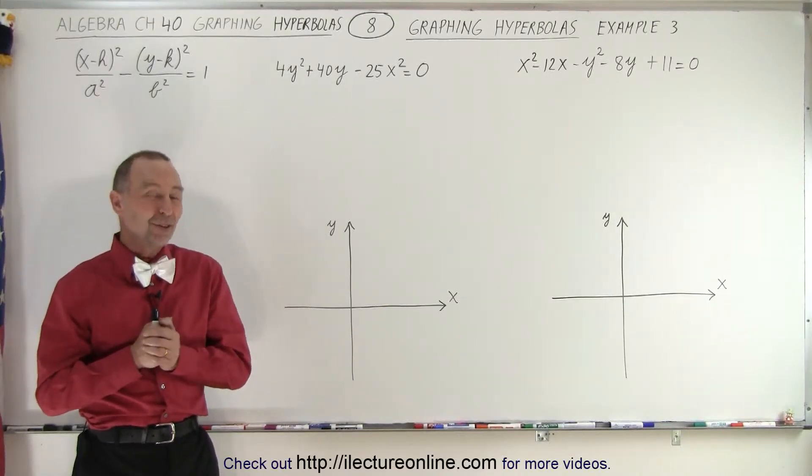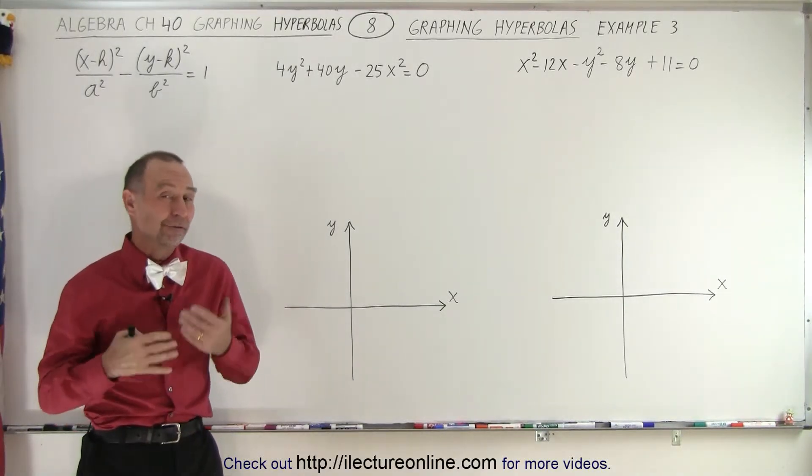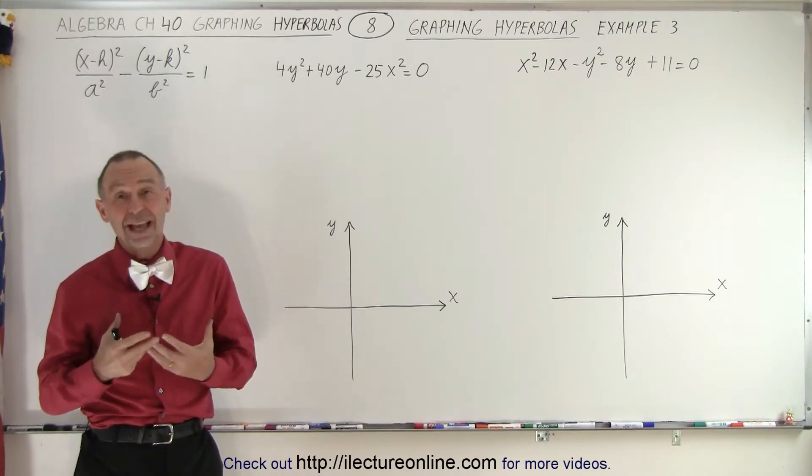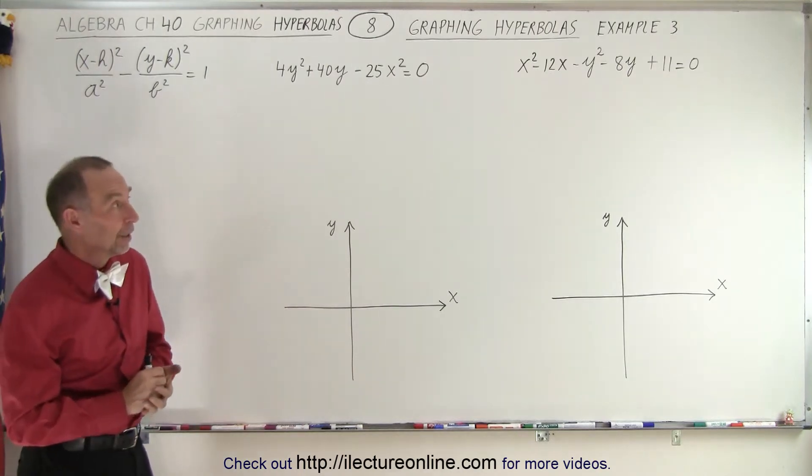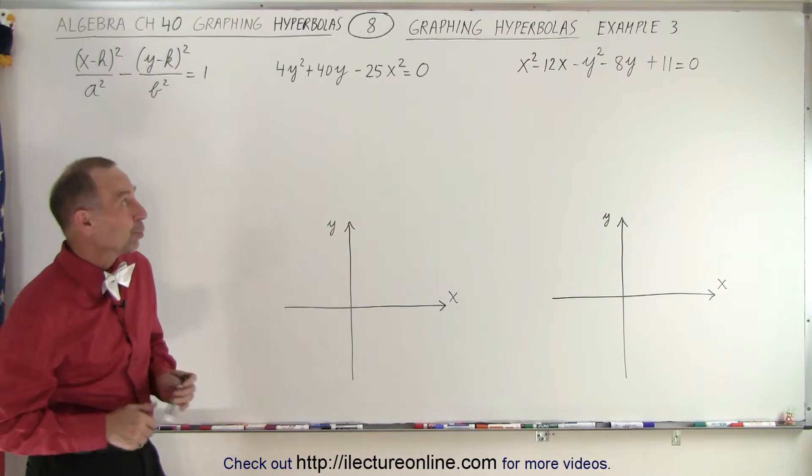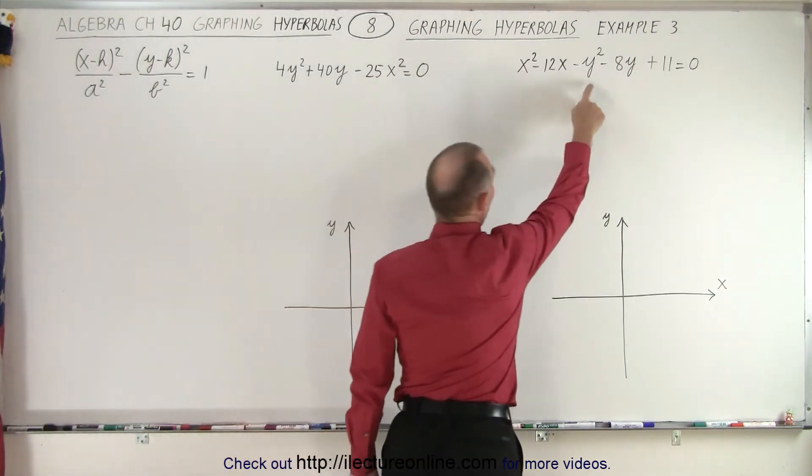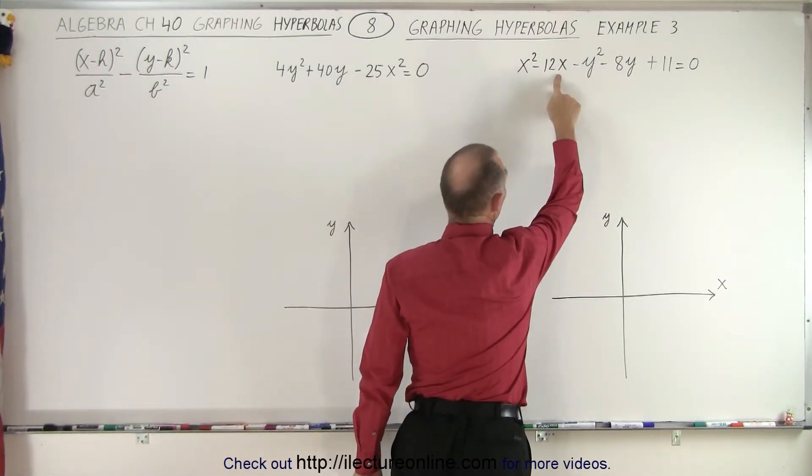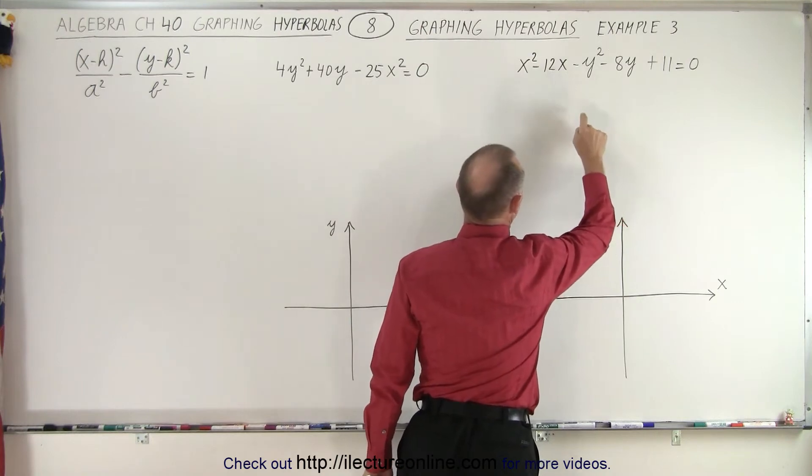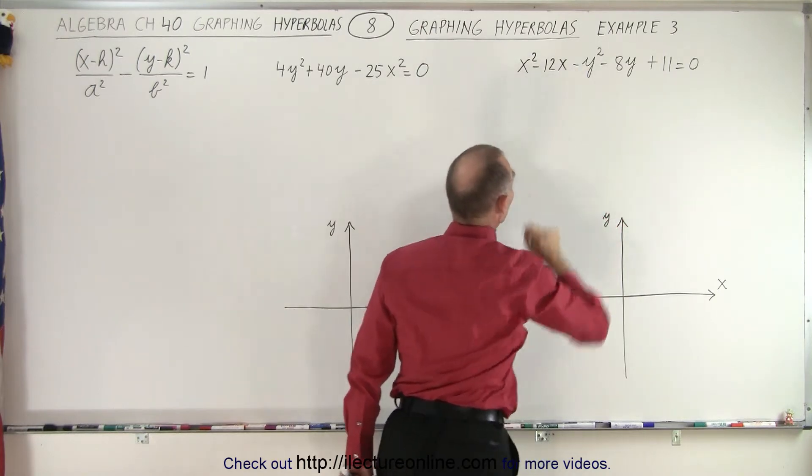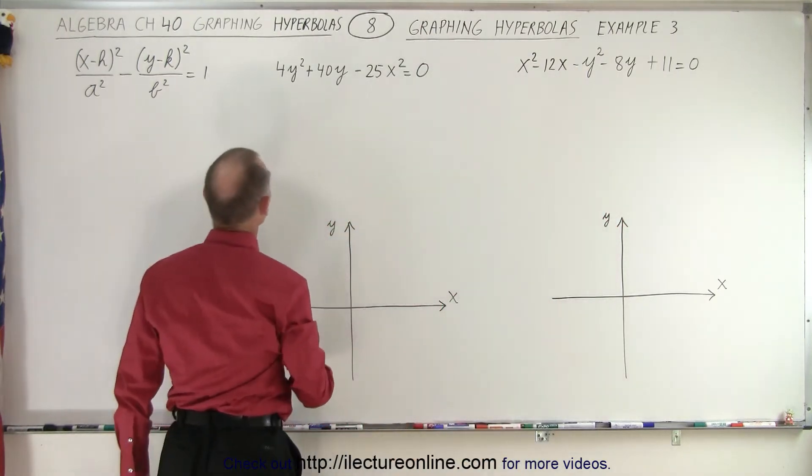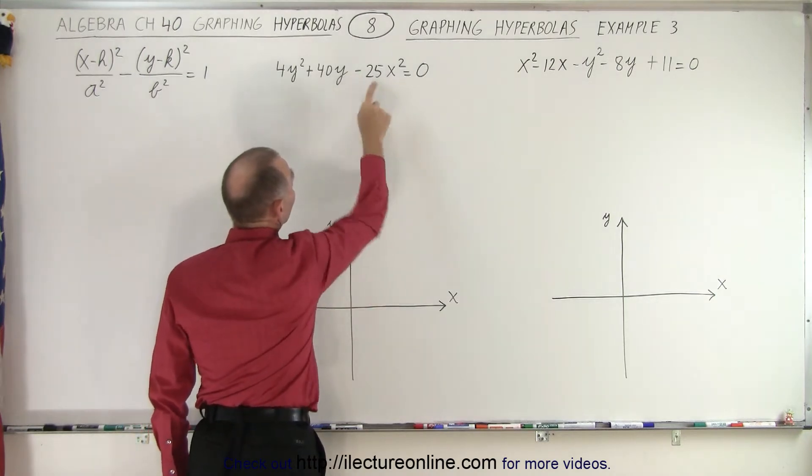Welcome to Y Lecture Online. Sometimes you're given the equation in a format where it's not clear that it's actually a hyperbola. But one thing gives it away. You do have an x-square and a y-square term, you do have an x-to-the-first and a y-to-the-first term, and there's a negative in front of the y-square. And over here, there's a negative in front of the x-square. That's usually a pretty good indication that it's probably a hyperbola.